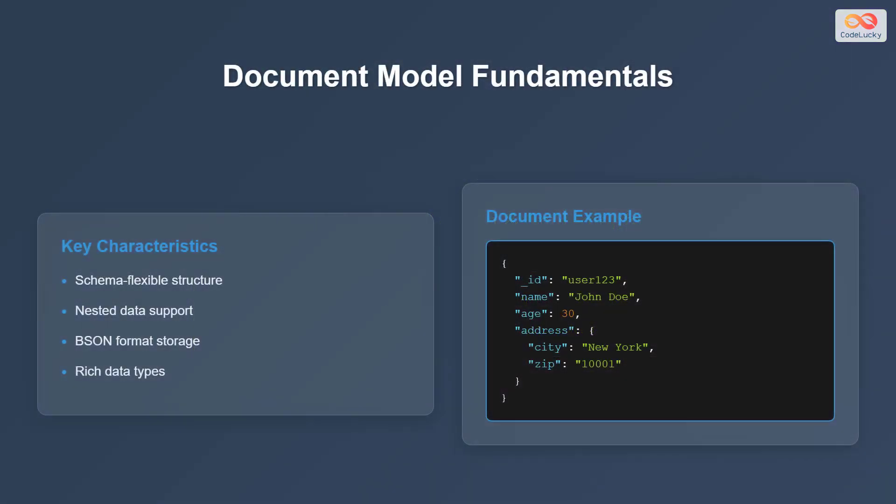Let's begin by exploring the document model, which is a core part of MongoDB. First, it has a schema-flexible structure, which allows the structure of documents in a collection to be different. This is unlike relational databases, where you need to define the schema ahead of time. Secondly, it supports nested data, allowing you to embed related data within a single document. This reduces the need for joins and simplifies data retrieval.